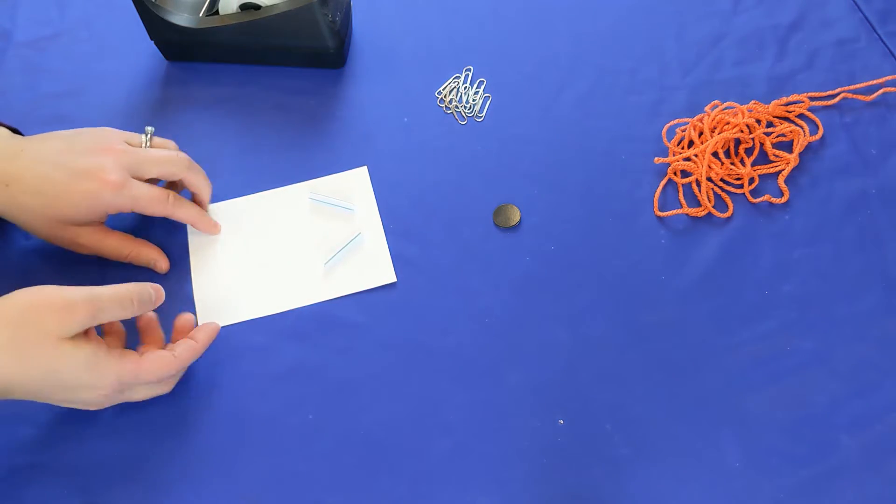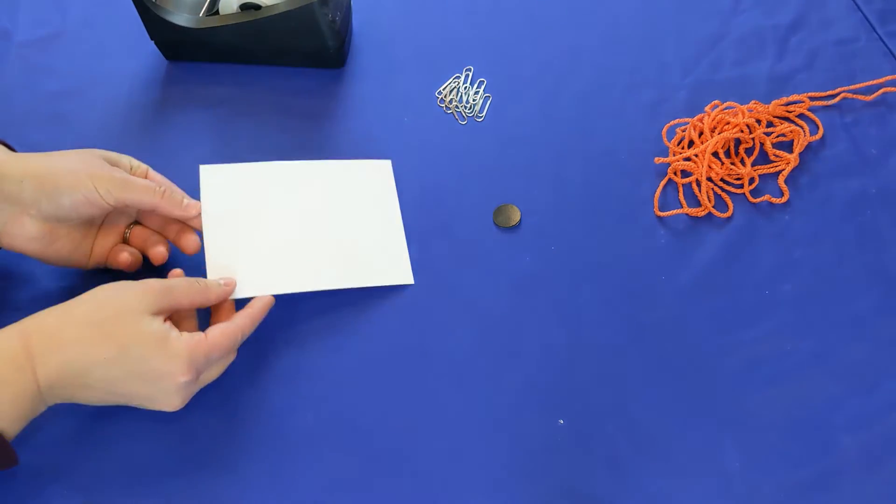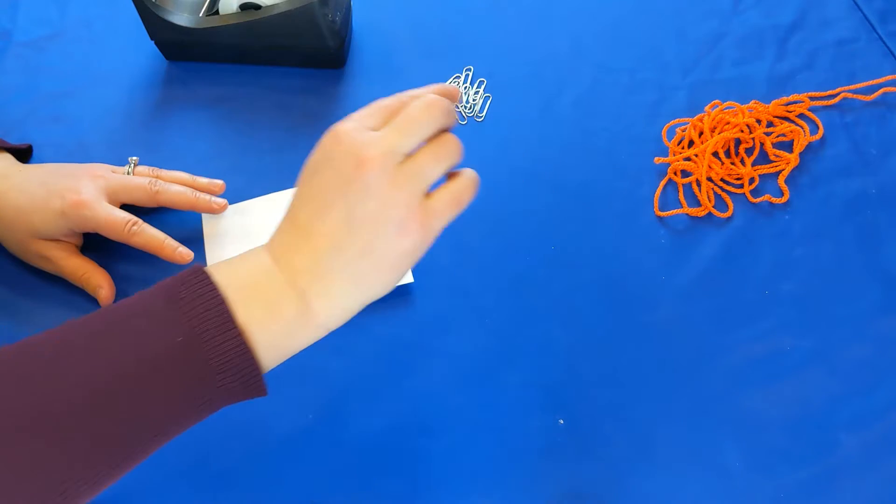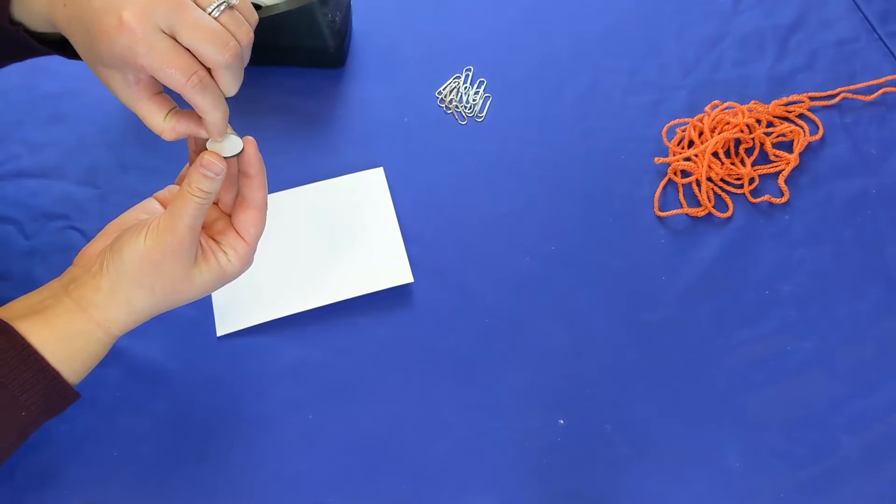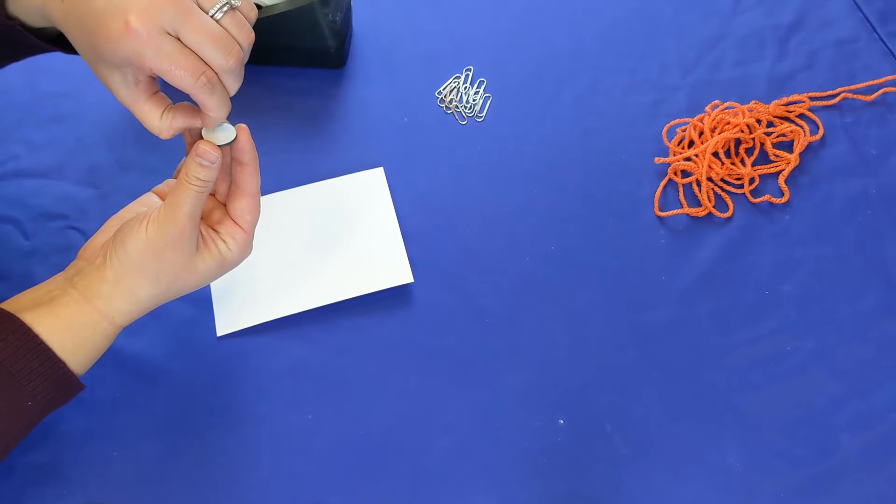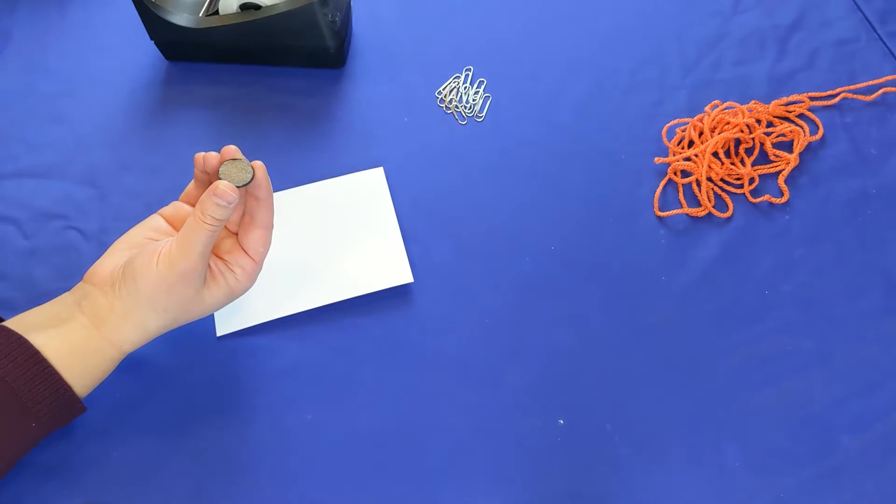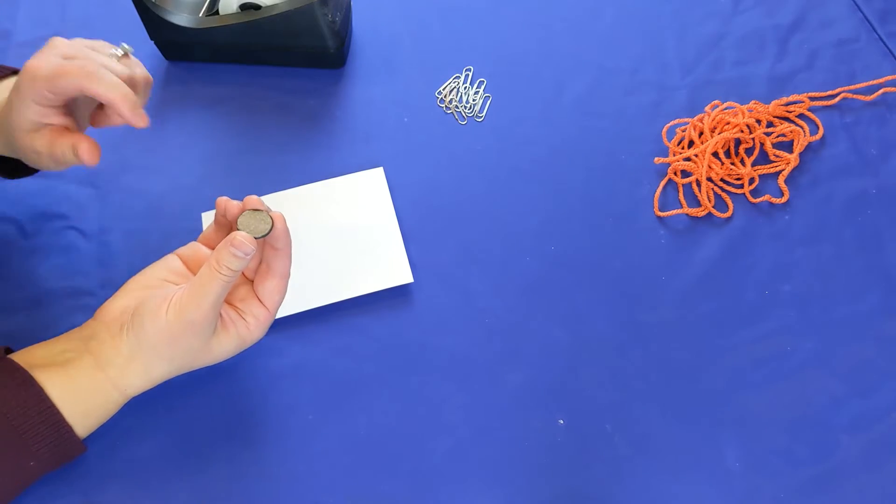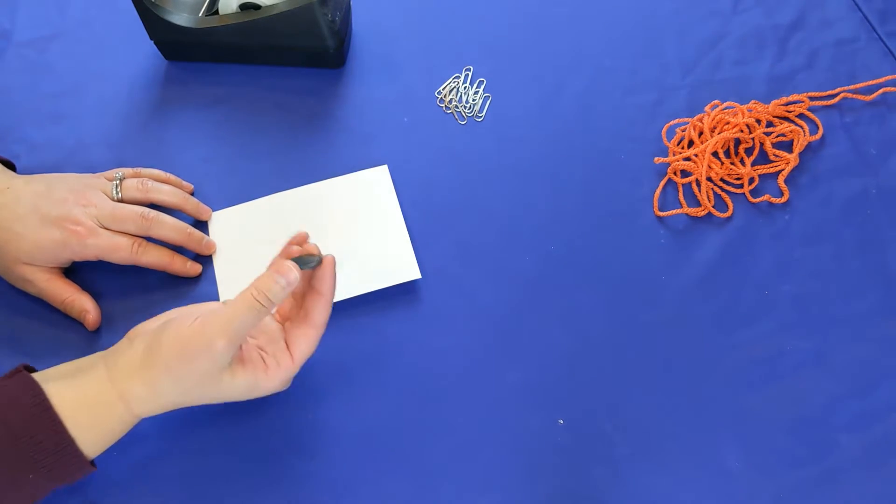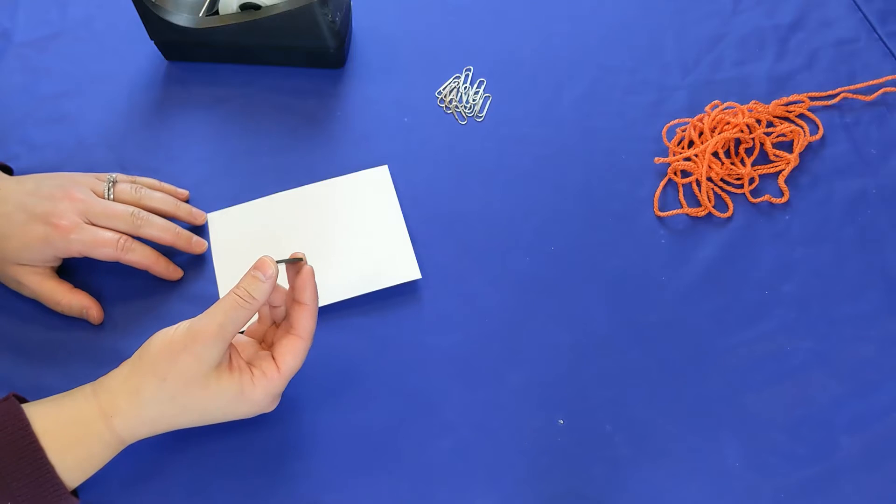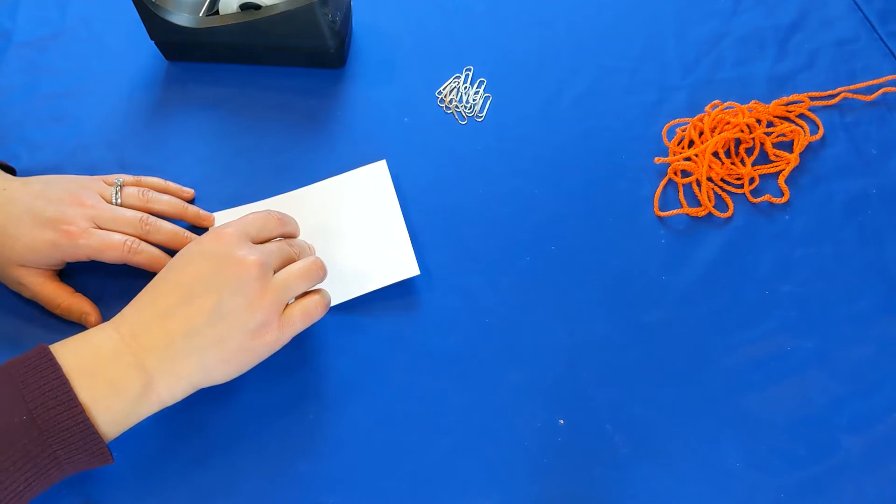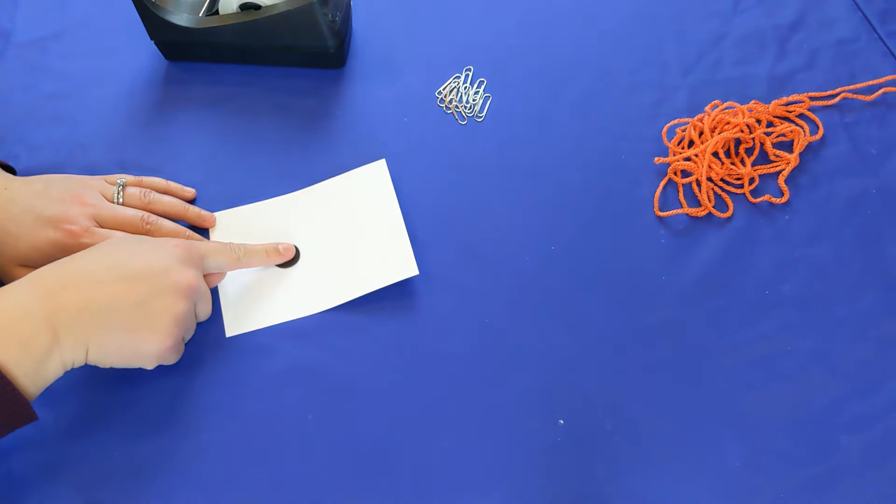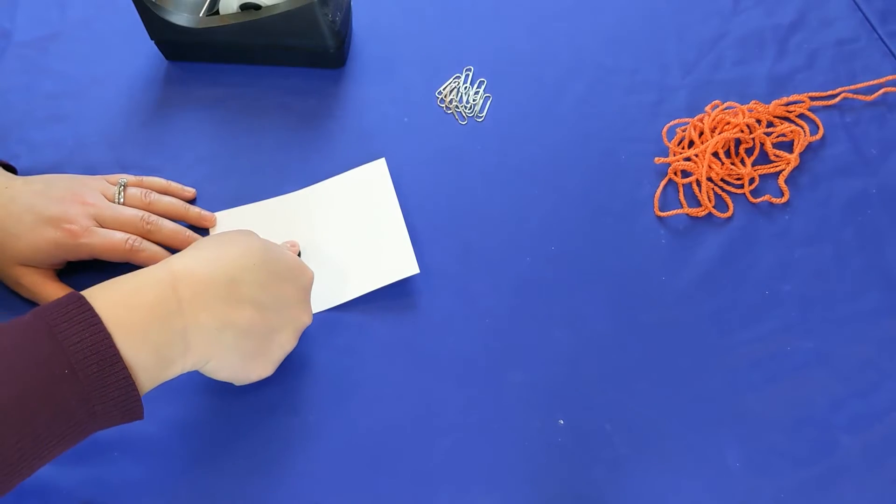Now we're going to flip our index card over and take our magnet. On the other side of the magnet is a piece of white paper. This is protecting the sticky side of the magnet, so we're going to peel that off and put the sticky side down onto our cardstock here. We're going to place it somewhere in the middle, wherever you want, but I'm going to place it just below the half of my paper. Press that down so it's nice and firm.